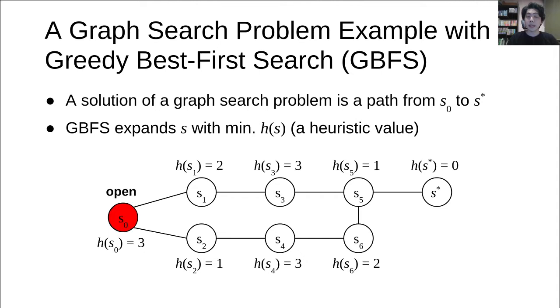GBFS expands state S with minimum h-value. At the beginning, GBFS expands S0. Then we have S1 and S2. GBFS selects S2 because S2 has the lower h-value. Then we have S1 and S4. GBFS selects S1.